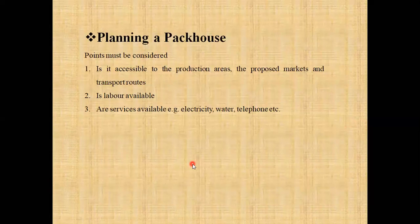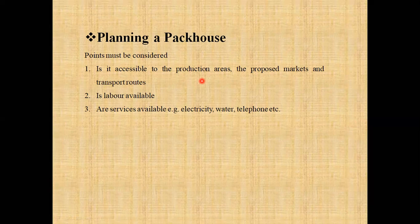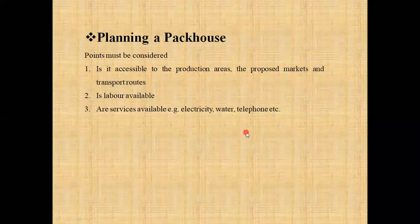Now we move towards the planning of a pack house. Points to consider while planning: first, production areas, proposed markets, and transport facilities — this primary information must be considered. Then labor availability is important. Then basic utilities — whether electricity supply, water supply, or telephone facilities are available. All these things are very important while planning a pack house.